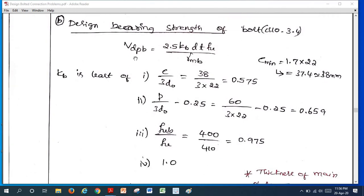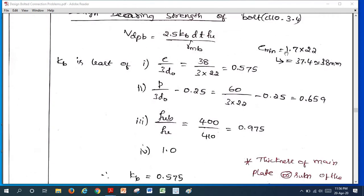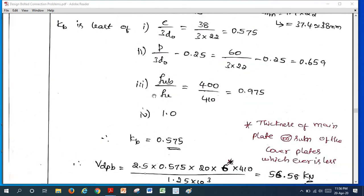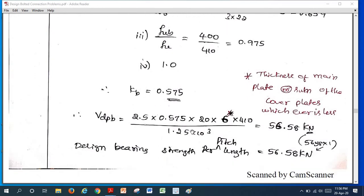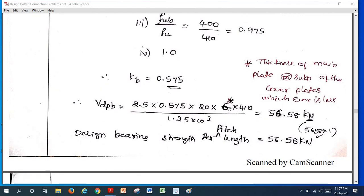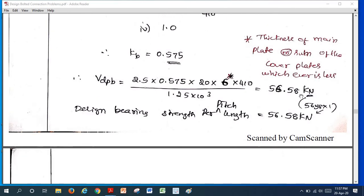Design bearing strength of a bolt according to 10.3.4. This is the formula, VDBP formula. E minimum, we should take from the code book 10.2.4.2, 1.7 times of D0, I have taken 38 millimeter. Kb value, we should calculate least of about three or four values. If we substitute to the formula, 2.5 Kb into D diameter of the bolt into t. Thickness, we should take carefully here. In case of butt joint, we should take thickness of the main plate or sum of cover plate whichever is less. They used 4 mm cover plates. Since 4 plus 4 becomes 8, thickness of the main plate was 6 mm. 6 mm and 8 mm whichever is minimum we should take. I have taken main plate thickness since it is less than 8 millimeter. 6 mm into FU, we get 56.58. Design bearing strength per pitch is 56.58.